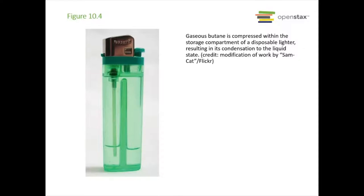We can also liquefy gases by compressing them — pushing them closer and closer together, putting that pressure on and forcing them to interact with each other until they get close enough to form a liquid. An example is butane, which is in our lighters. The storage compartment compresses that butane so that it becomes a liquid, and then we can use our butane lighters.